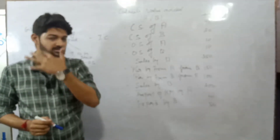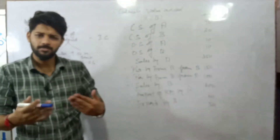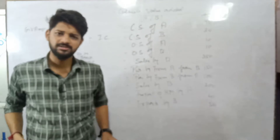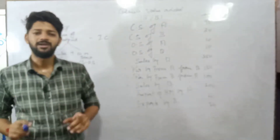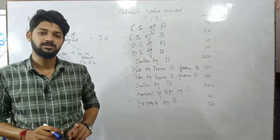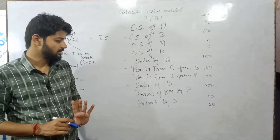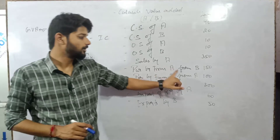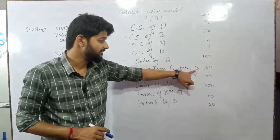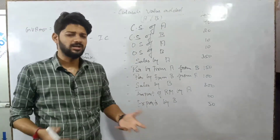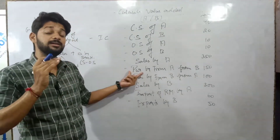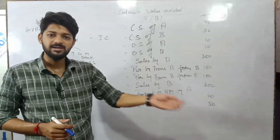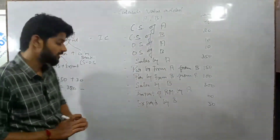Now we deduct Intermediate Consumption. Intermediate Consumption includes items like purchase of raw materials. Import of machinery is given, but machinery will not be added because machinery is a final product — we deduct only the value of intermediate consumption. Purchase by Firm A from Firm B is an intermediate consumption: 150. Plus import of raw materials: 60 lakh. So 150 plus 60.